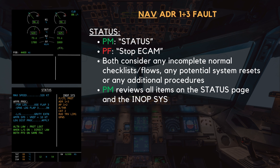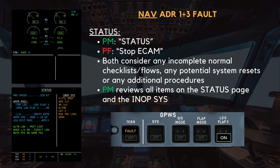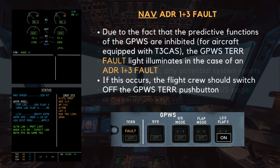Approach procedure: for landing, use flap 3. GPWS landing flap 3 push button — on. Due to the fact that the predictive functions of the GPWS are inhibited for aircraft equipped with T3 CAS, the GPWS terrain fault light illuminates in the case of an ADR 1 plus 3 fault. If this occurs, the flight crew should switch off the GPWS terrain push button.